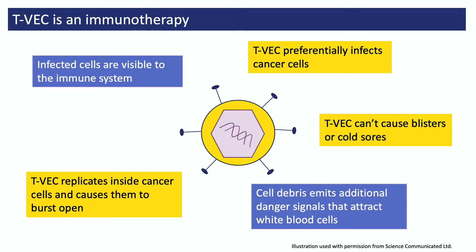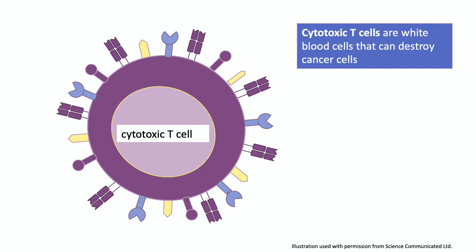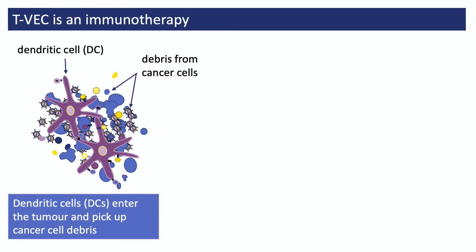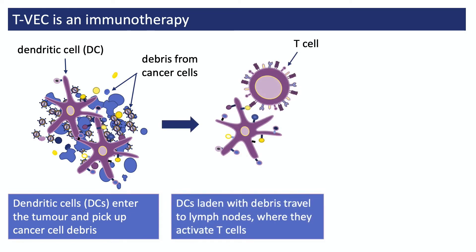When TVEC destroys cancer cells, it creates lots of cancer cell debris that emits danger signals to the immune system. TVEC has also been designed so that it's much more visible to our immune system than the natural virus. As with checkpoint inhibitors like nivolumab and pembrolizumab, the immune cells activated by TVEC are cytotoxic T cells. When TVEC has killed sufficient cancer cells, the debris attracts white blood cells called dendritic cells, which start hoovering up some of this debris. When fully loaded, dendritic cells travel to nearby lymph nodes — little bean-shaped clumps of tissue scattered throughout our body where white blood cells congregate and communicate. It's here that dendritic cells show the debris to T cells.